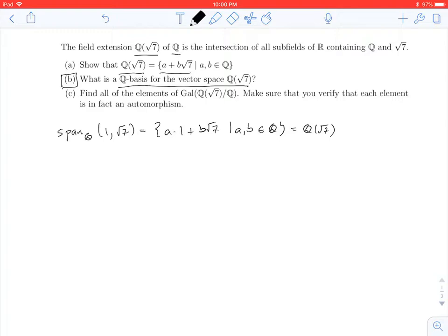But Q is a subspace of it. So a one-dimensional extension would actually just mean Q adjoin root 7 would actually have to equal Q.